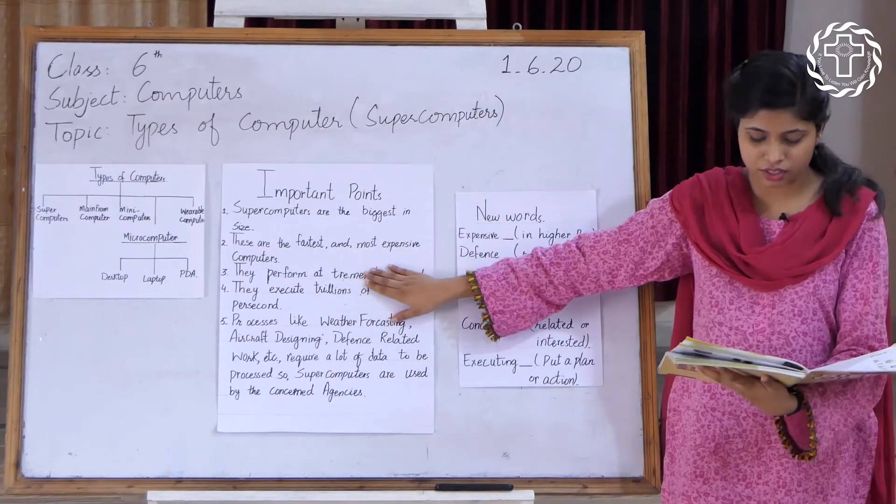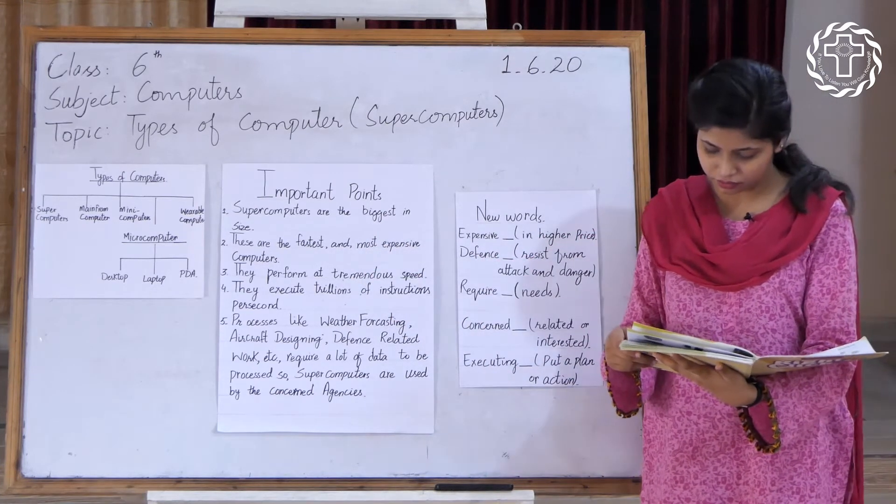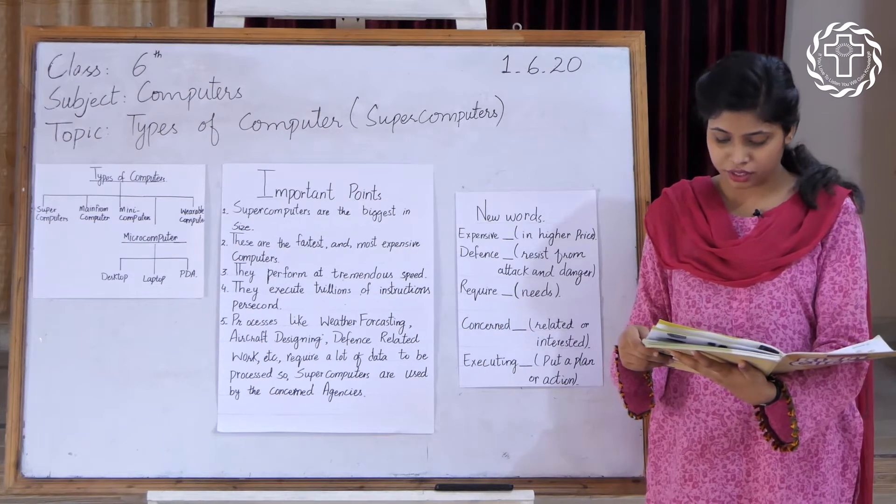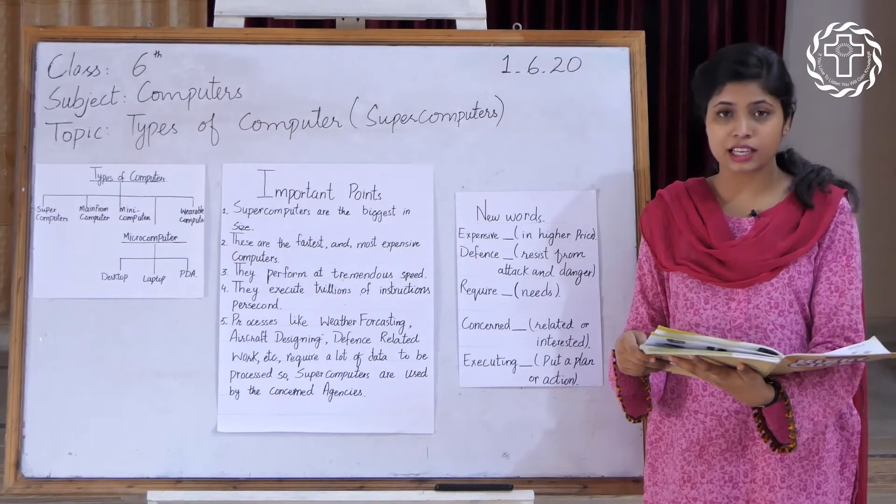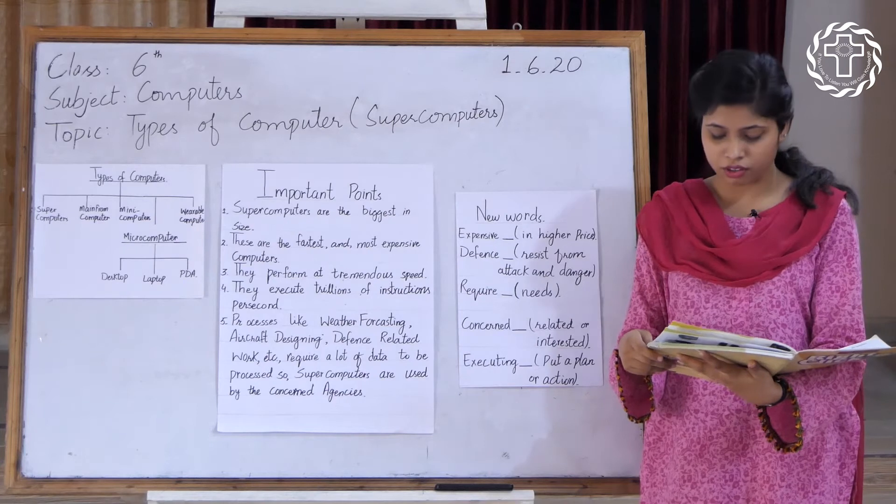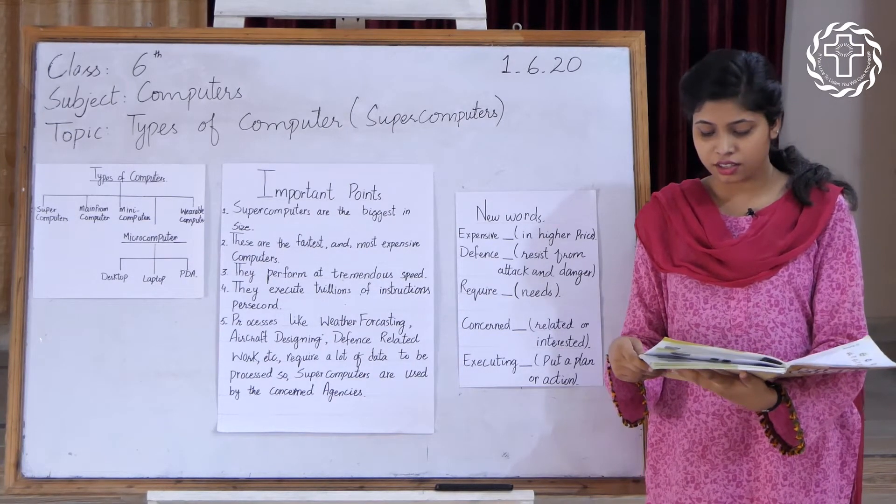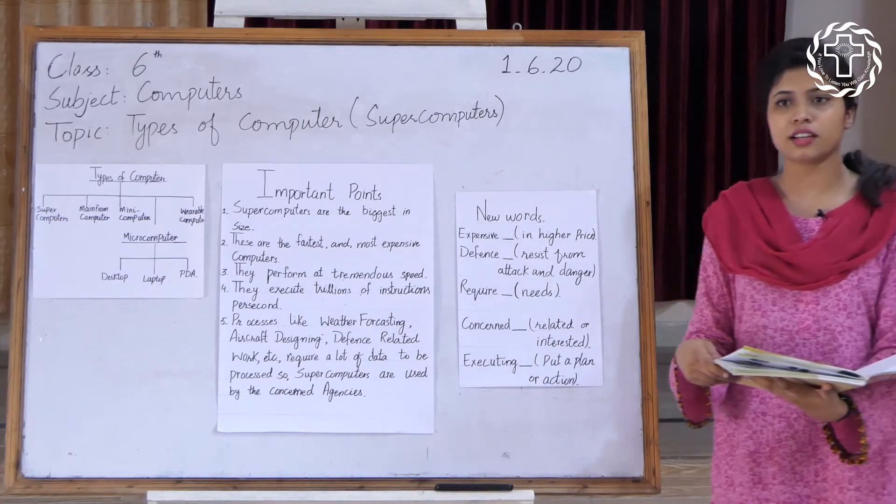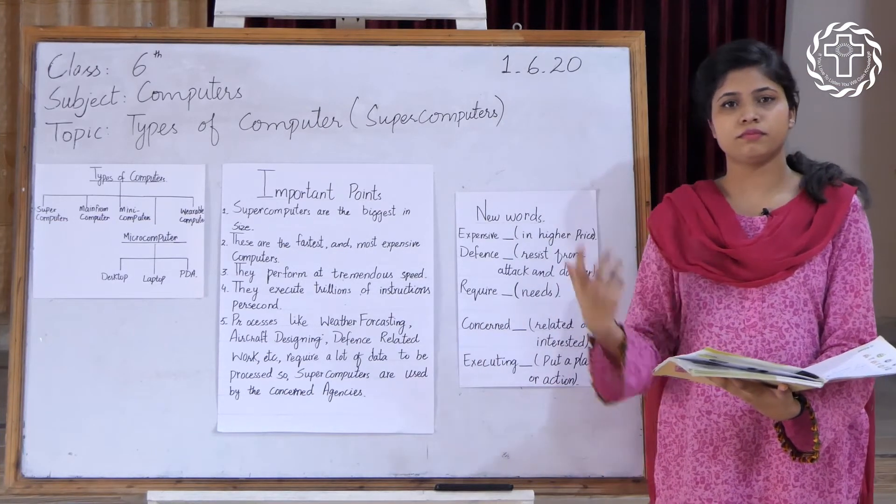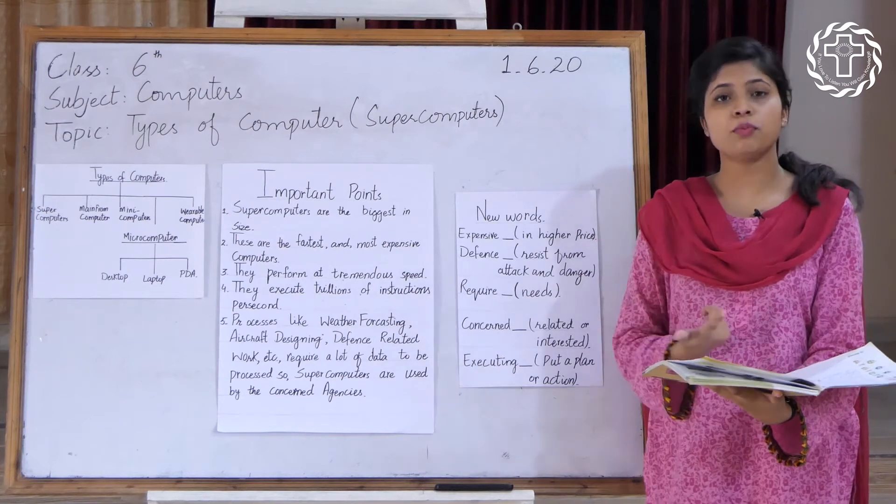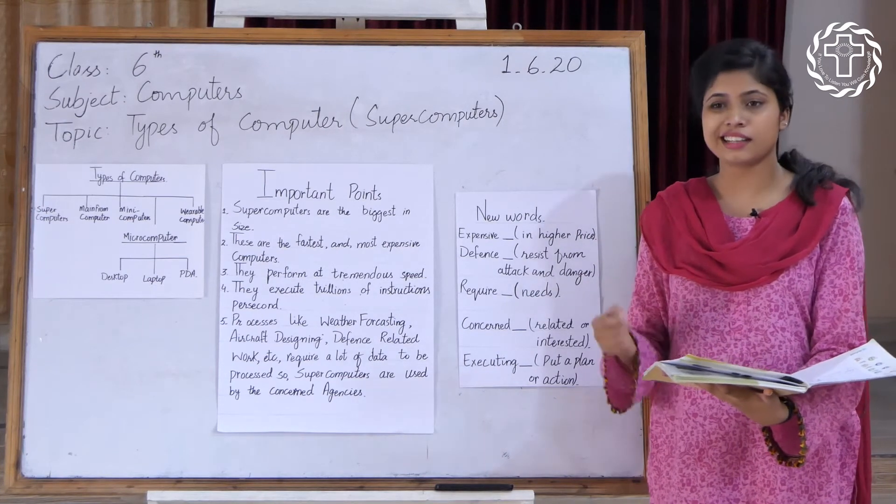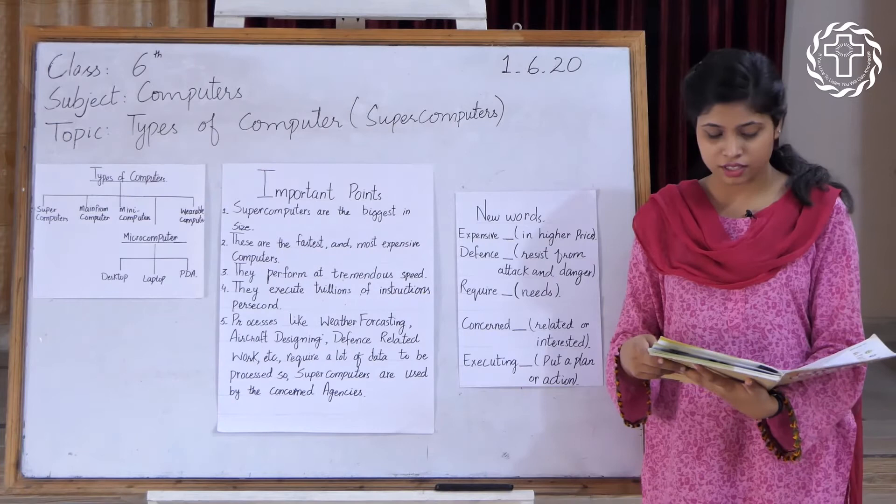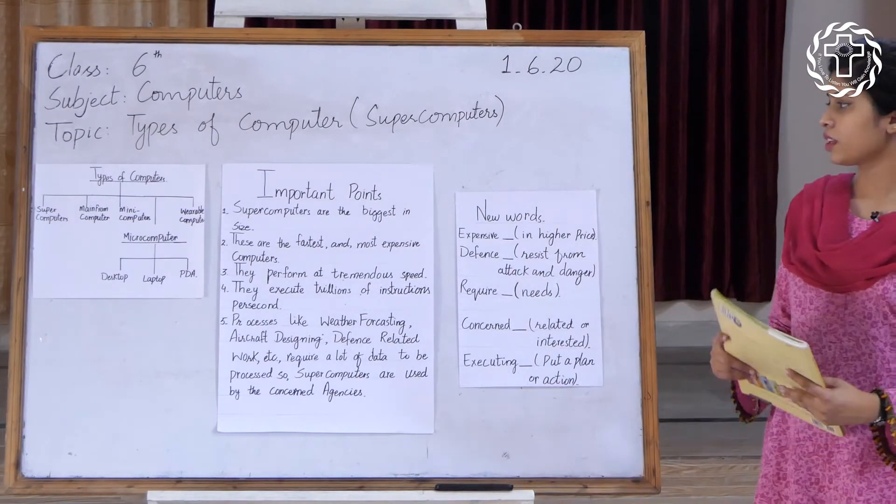A supercomputer covers the space equal to two basketball courts and weighs 106 tons. Means they are very biggest in size. They cover about two basketball court areas and its weight is 106 tons.